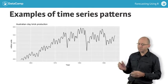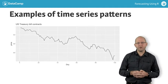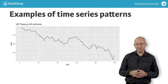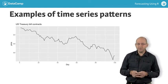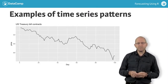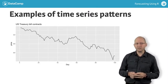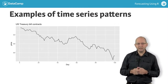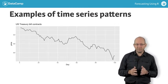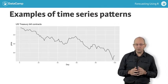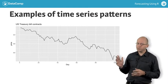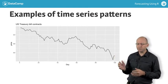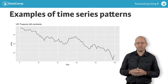The next graph shows US Treasury bill contracts over 100 consecutive days. There is no seasonality here. This looks very much like a downward trend, but it is actually part of a much longer cycle. When you have only a short segment of data and you see only part of a cycle, it can look like a trend. You probably would not want to forecast this series continuing to fall indefinitely.